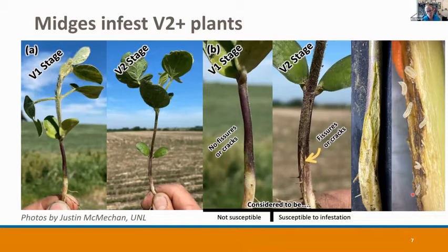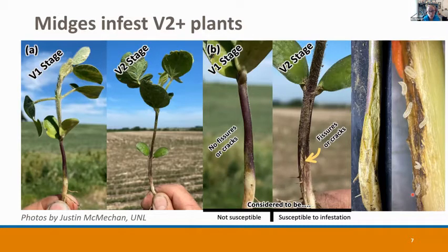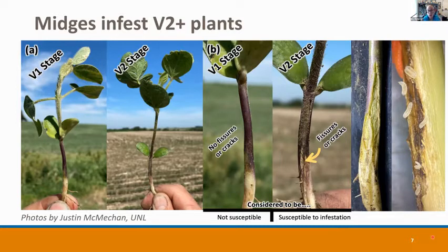When first trying to understand when midges can infest plants, through our observations we can't find larvae in cotyledon or V1 stage soybean — they tend to infest a plant at V2 or later. Under ideal conditions, rapid soybean growth creates little fissures or cracks or thinning spots on the stem, and we think this is ideal for those delicate flies to lay eggs. One photo is especially notable because you're going to see eggs, small larvae, and large larvae all in the same plant. It is common to see a plant with different life stages all at the same time.